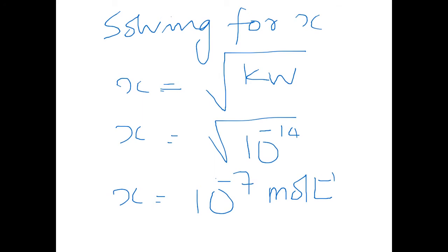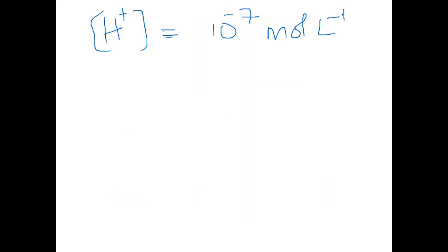Since x is the same for hydrogen and hydroxide ions, both the concentration of hydrogen ions and hydroxide ions are the same. Using this value, we can now determine the pH of the solution using Sorensen's equation.